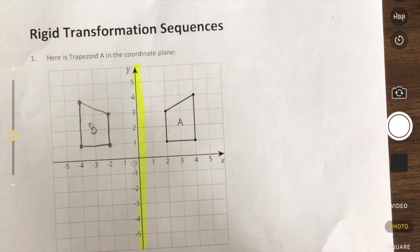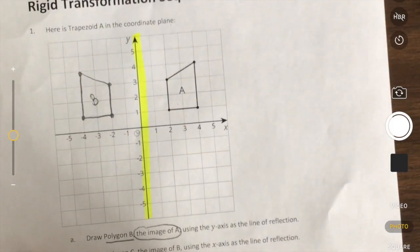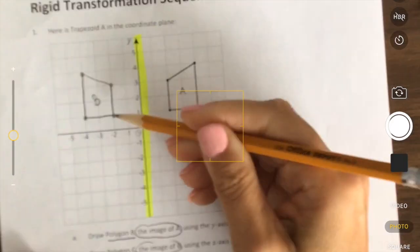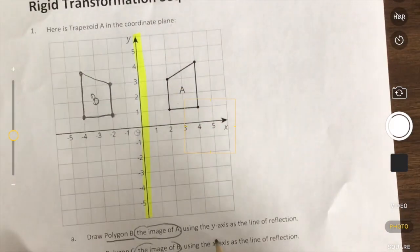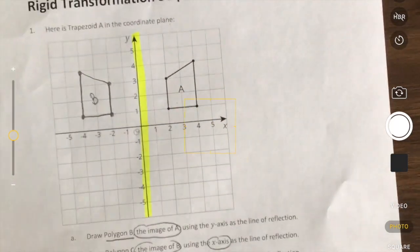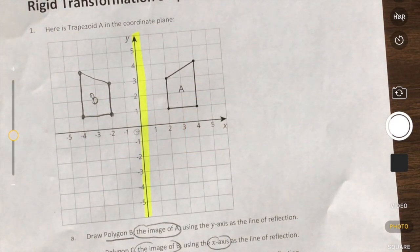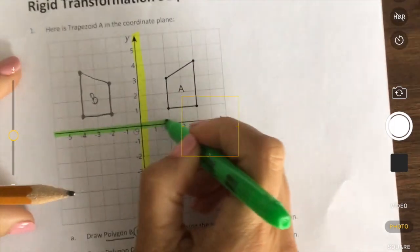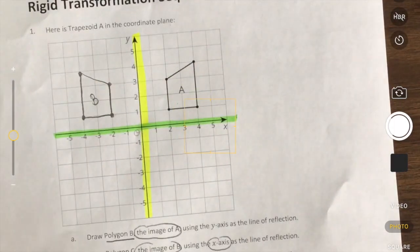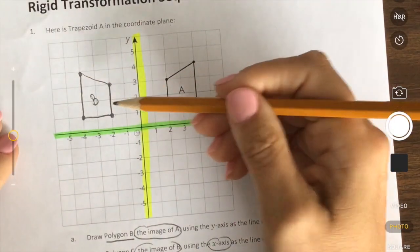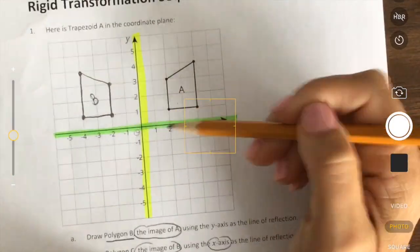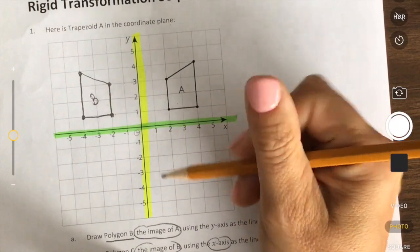Now we're going to take and draw a polygon C, the image of B. So we're taking B and going to make C using the X axis as the line of reflection. So let's use a different highlighter. We'll highlight the X axis so we know what we're doing. And now this time we're going to take this B shape and we're going to go over the X axis to make the polygon C.